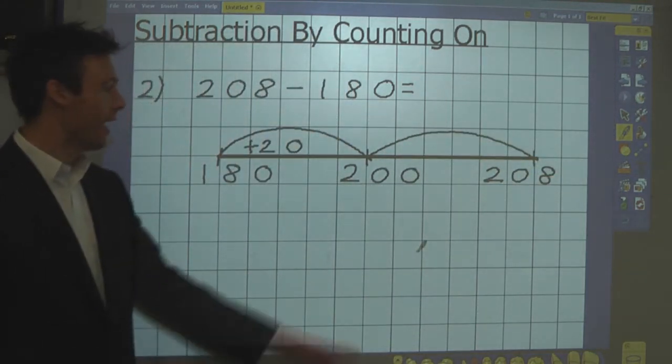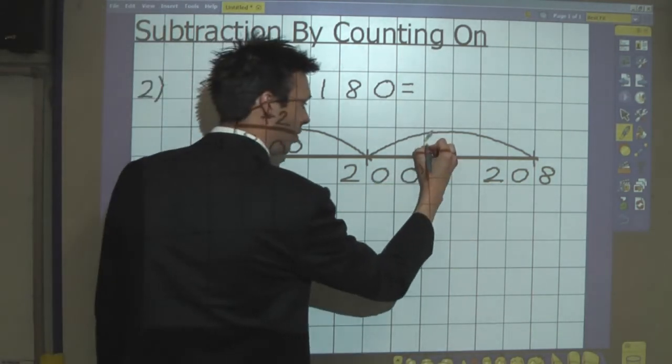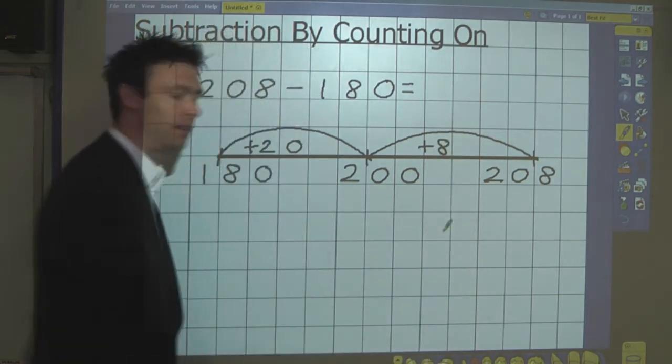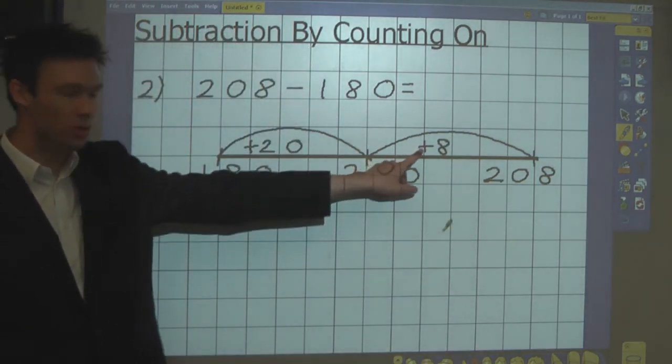Then I need to think what I need to add to go from 200 to 208. So I'm going to add 8, and the answer is 28.